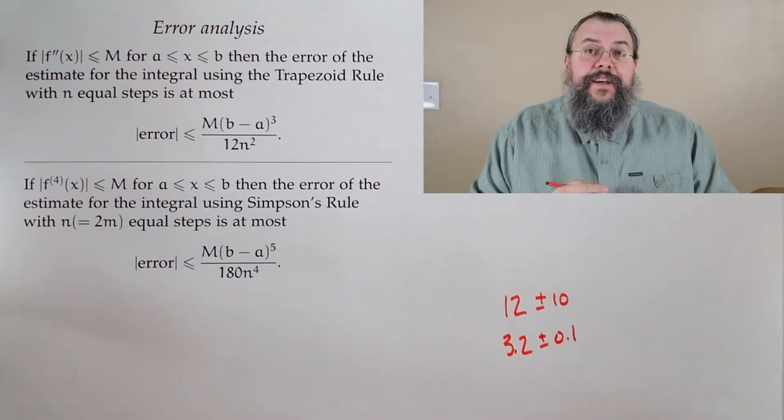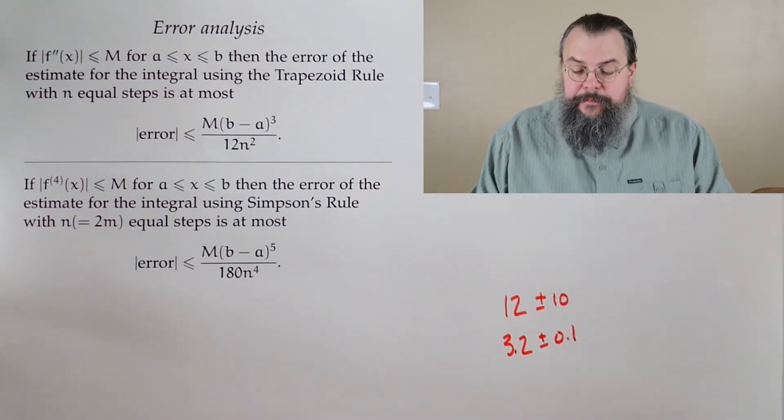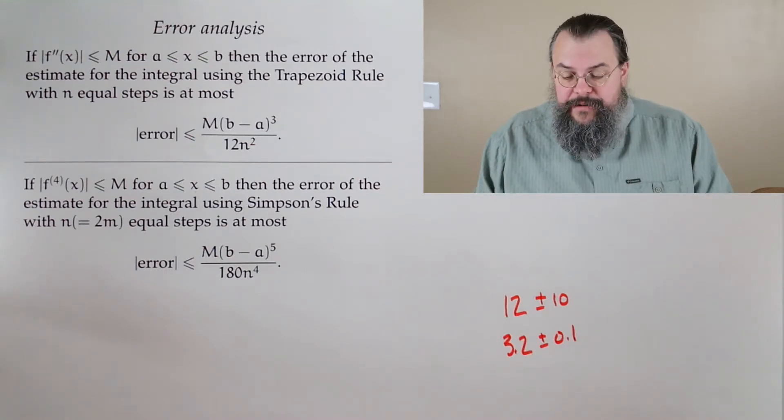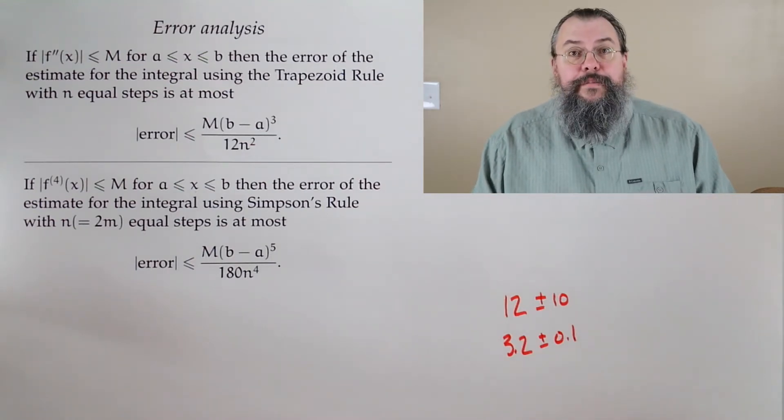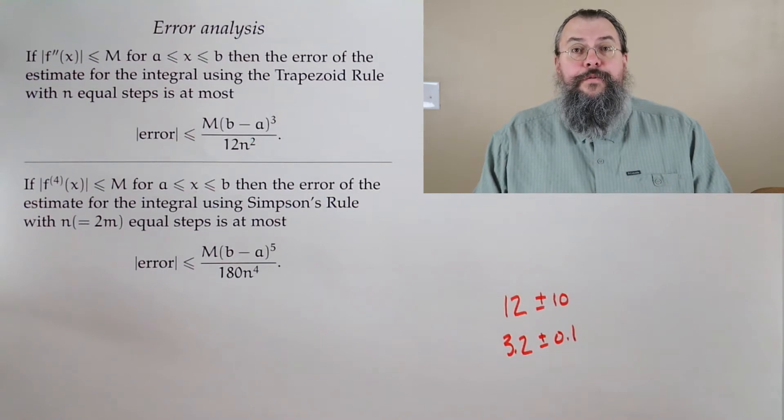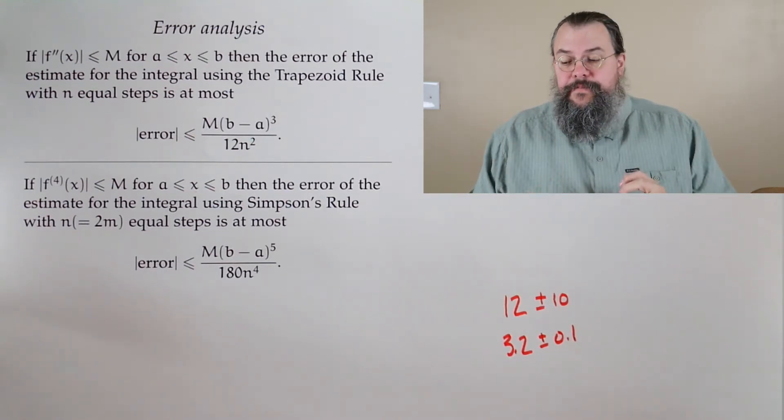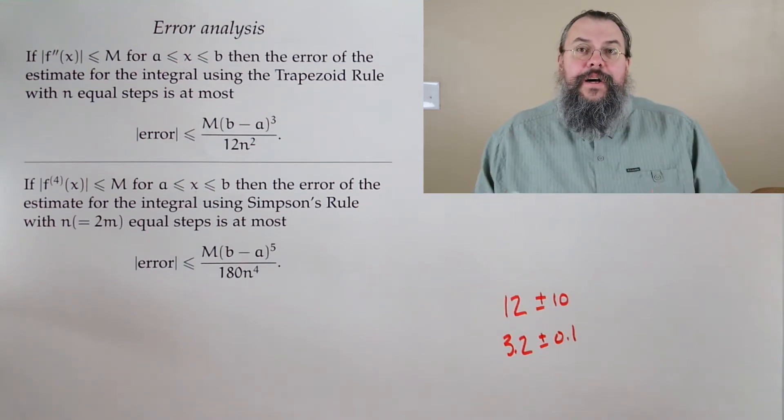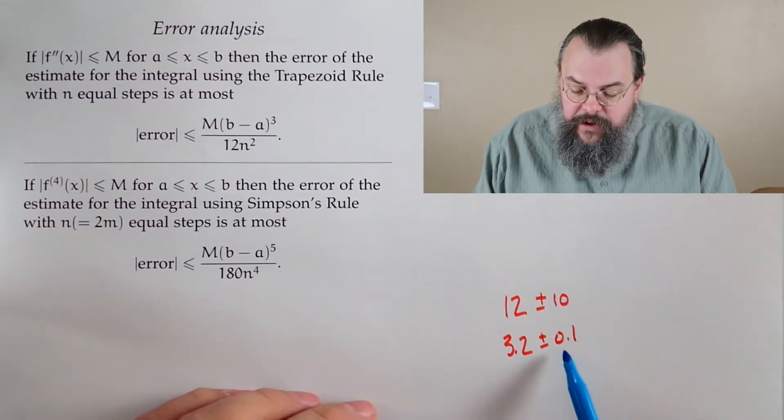Now, if you check, it is true that pi is within 10 of 12. It's also true that pi is within 0.1 of 3.2. Which one is the better estimate? Well, we all know the answer to this, right? It's the one that has the smaller error.